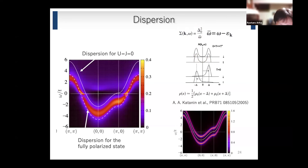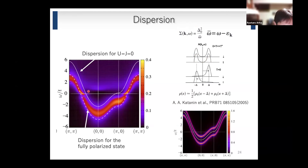If we calculate the spectral function using the self-energy proposed by Andre, we have two peaks corresponding to minority spin and majority spin. Comparing these spectral functions, the majority spin part is almost the same. For the minority spin, in our cellular DMFT calculation, the spectrum becomes very broad. We can see bands corresponding to the minority bands, and the band structure is almost that of the fully polarized band.